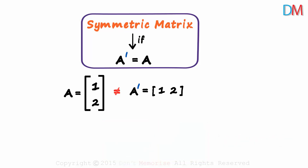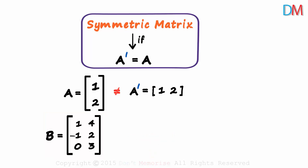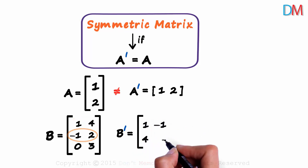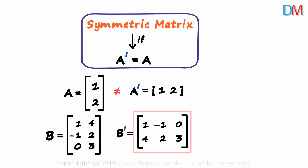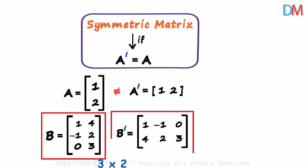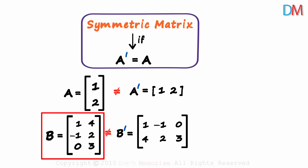Let's take another example. Here's matrix B. Is matrix B symmetric? To know if B is symmetric, we find B transpose first. The first row becomes the first column, the second row becomes the second column, and the third row becomes the third column. The order of B is 3 by 2 and that of B transpose is 2 by 3. As the orders are different, they are not equal, which means B is not a symmetric matrix.